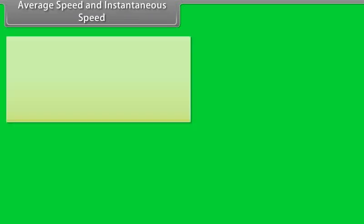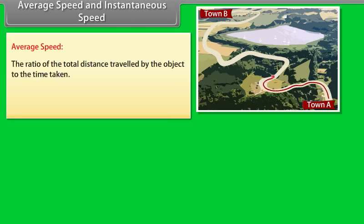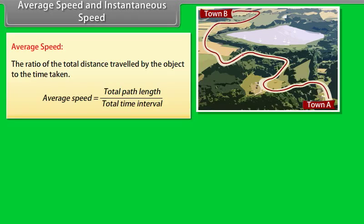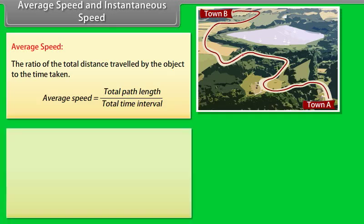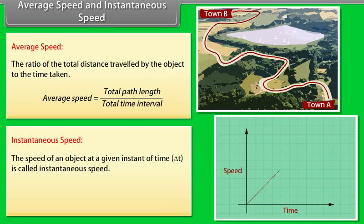Average speed and instantaneous speed: Average speed is the ratio of total distance traveled by the object to the total time taken. Therefore, average speed = total path length / total time interval. Instantaneous speed is the speed of an object at a given instant of time.